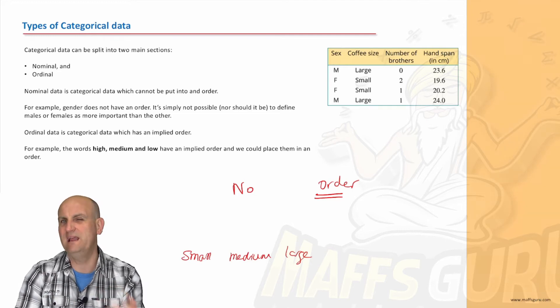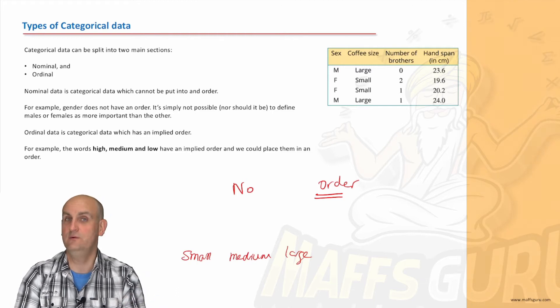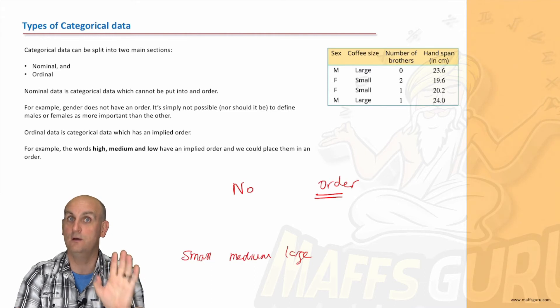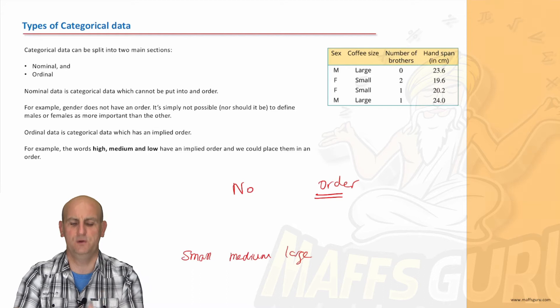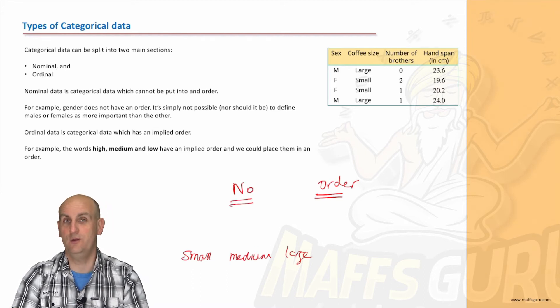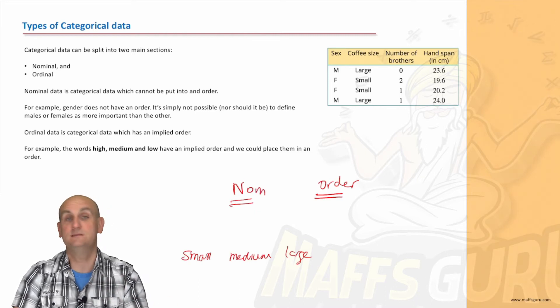But what about male and female? Is that ordinal? Are males more important than females? Careful. Are females more important than males? Well, Beyonce seems to think so, because they're going to run the world. And trust me, that's more than likely. And go, girl, go, girl. But the point of it is, male and female, you can't put in an order. So that is nominal, which starts with NO, and I like to think of that as NO order. So nominal means NO order.